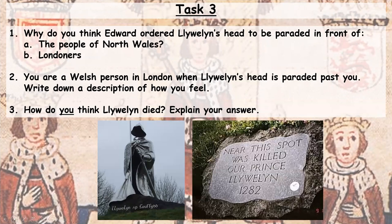Your third task: answer these three questions. First, why do you think Edward ordered Llewellyn's head to be paraded in front of (a) the people of North Wales and (b) the Londoners? Second, imagine you're a Welsh person living in London who sees Llewellyn's head paraded past you while all the English people are celebrating — write a description of how that makes you feel. Third, explain how you think Llewellyn died: you've read many sources through this lesson, so decide which account you think is most likely and explain why. Pause the video now and complete that task.